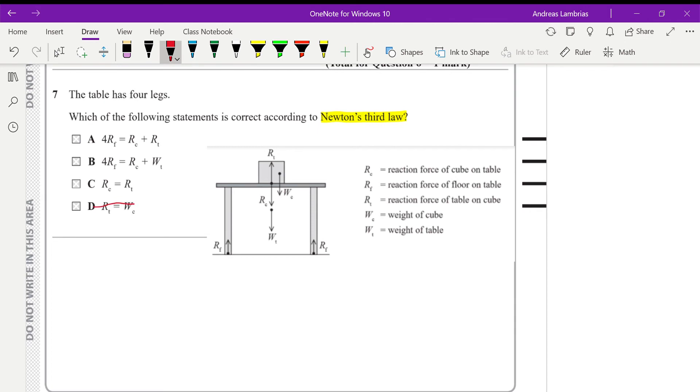Then if I look at B, it relates the four reaction forces of the four legs with the reaction force of the cube on the table and the weight of the table. Again, if you look at all the forces acting on the table, that equation is correct because the table has a resultant force of zero. Again, correct equation, but all of these forces are acting on the table. So this cannot be a pair of Newton's third law forces.